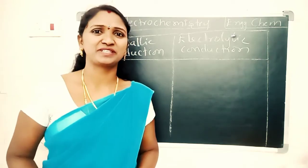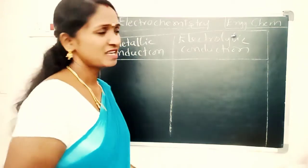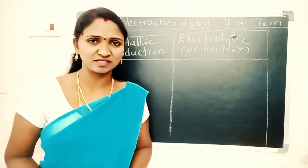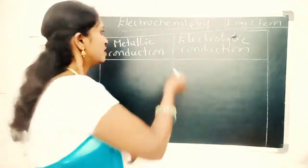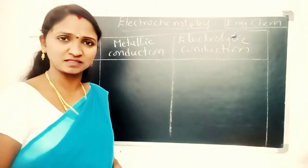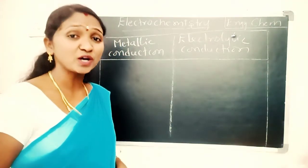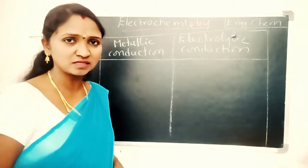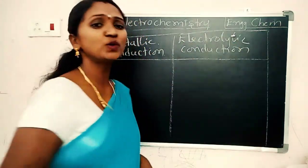Hi, this is Mallishwari. Welcome to our channel, Chemistry with Mallishwari. Today our topic is the differences between metallic conduction and electrolytic conduction. Metallic conductors are also known as electronic conductors, and electrolytic conductors are also known as ionic conductors.